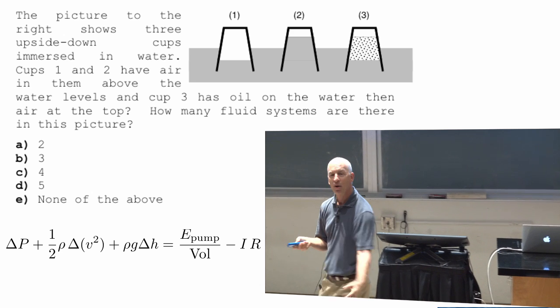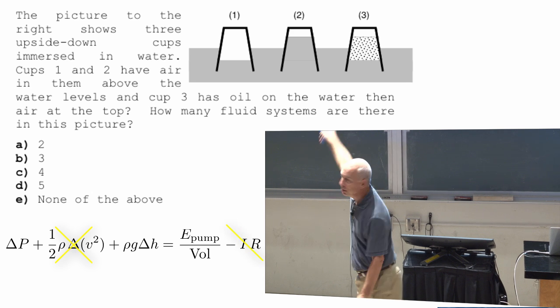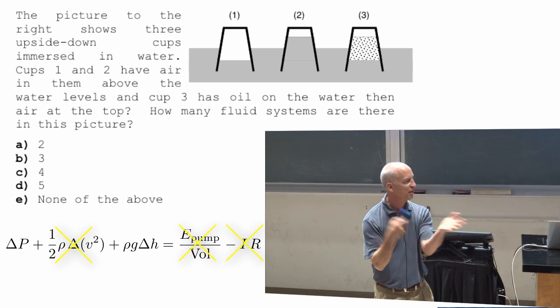So that water is one fluid system. And you can use this equation to talk about this steady state flow equation, to talk about this water, even though the water's not flowing. The reason, actually, the fact that the water's not flowing makes it a lot easier. There's no kinetic energy changes. There's no current. There's no pump in the problem. All sorts of things certainly are zero.